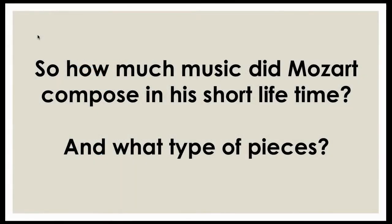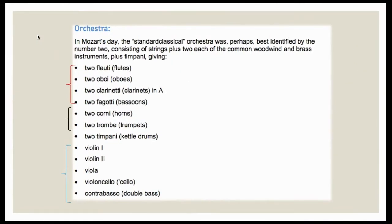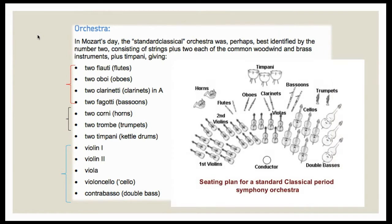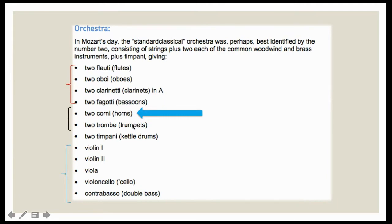What resources were available to Mozart at the time? His orchestra was a standard classical orchestra — with the woodwind family, the brass family, and the string family. The string family is the biggest, woodwind is the second biggest, and the brass was still in its infancy. I've put an arrow pointing to the horns, and I want you to look at what it says: clarinet in A. I'll explain about that later in more detail.